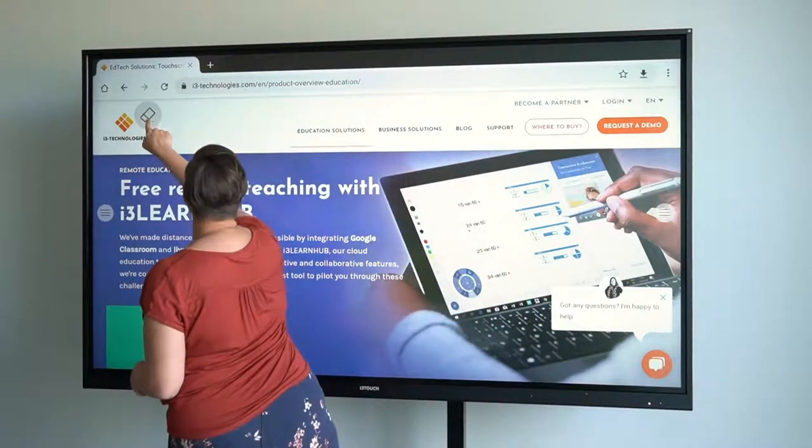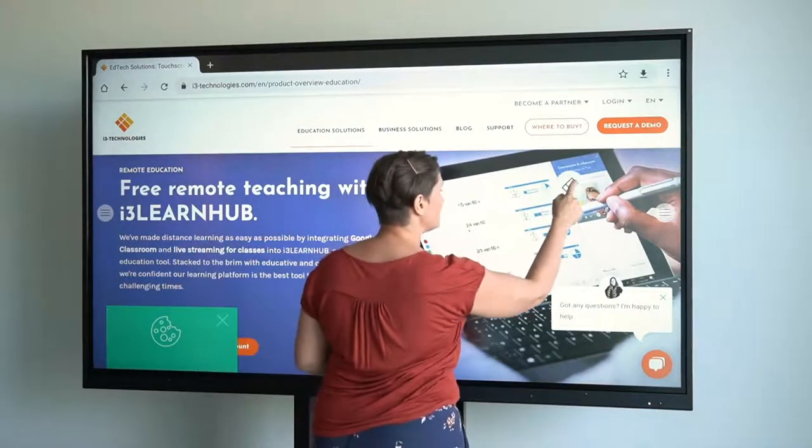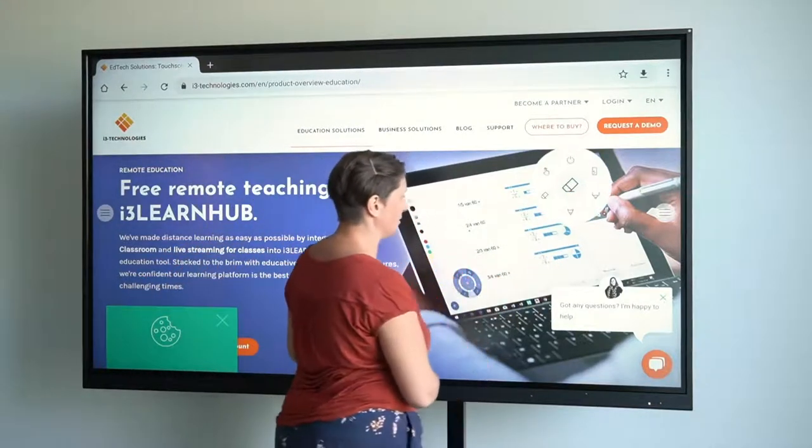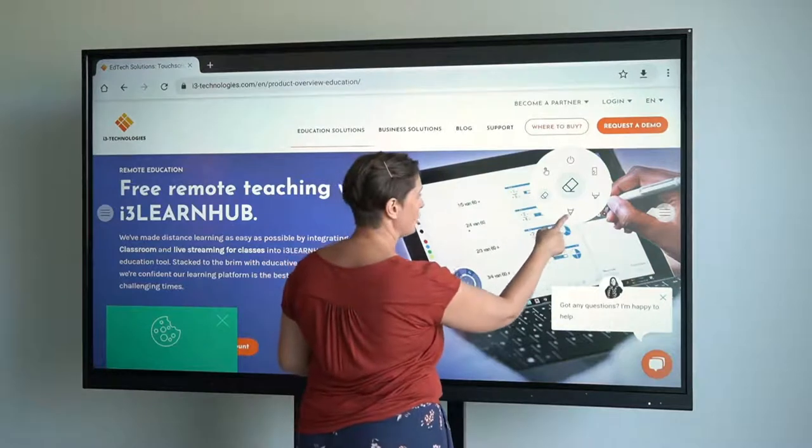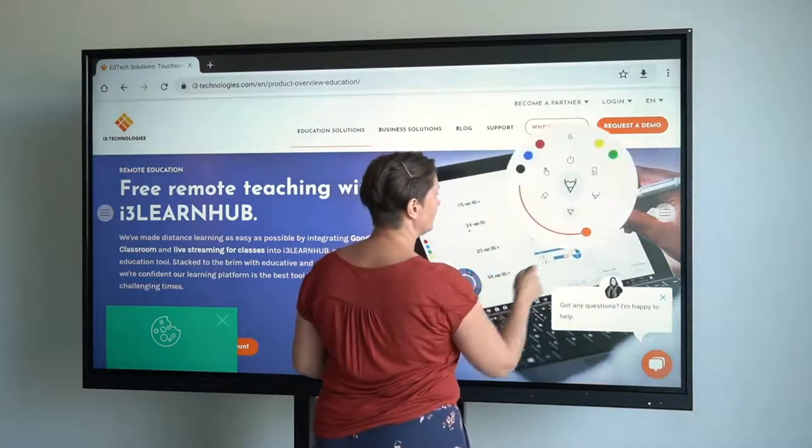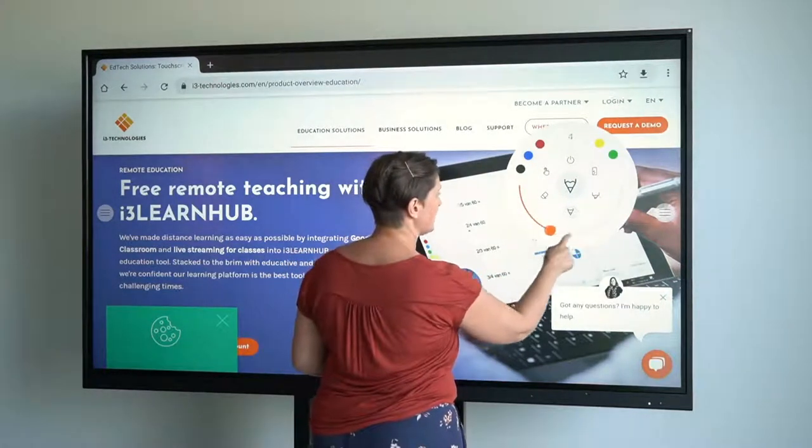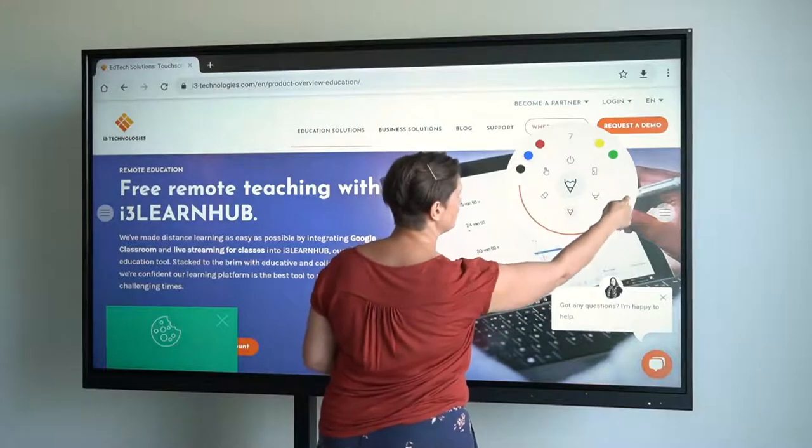As you can see, the annotate tool looks very similar to the toolbox from the whiteboard, with an eraser, a pen, a marker, the possibility to adjust the size, and the possibility to choose the color.